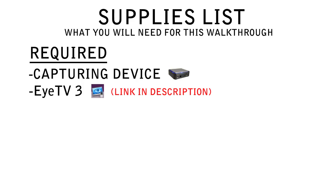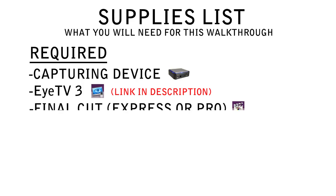So you've got your capturing device and your capturing software. The next thing you're going to need is editing software. Because we're on Mac OS X and we're going to be making this professionally, we're going to be using something called Final Cut Express. You can also use Final Cut Pro — there's not really a huge difference. That's the editing software I'm going to be explaining how to edit YouTube gaming videos with.